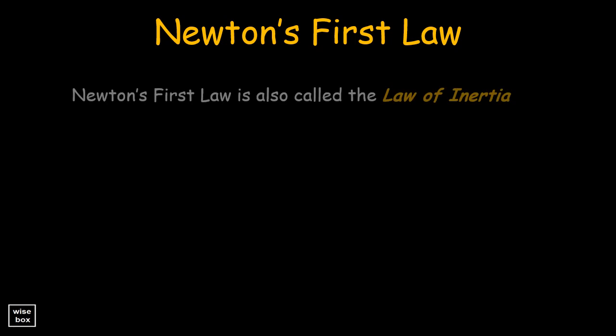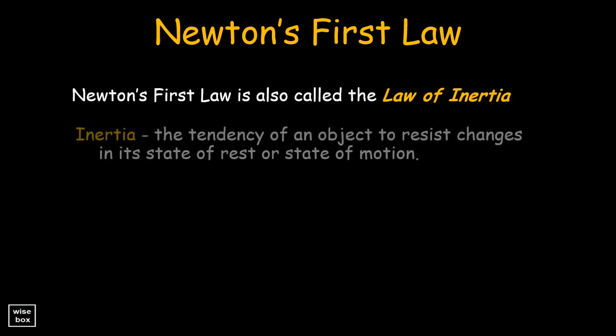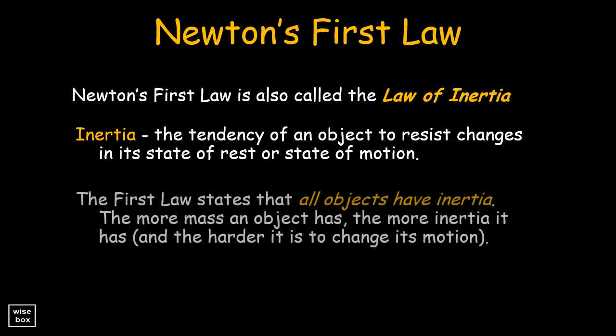Newton's first law is also called the law of inertia. Inertia is the tendency of an object to resist changes in its state of rest or state of motion. The first law states that all objects have inertia. The more mass an object has, the more inertia it has, and the harder it is to change its motion.